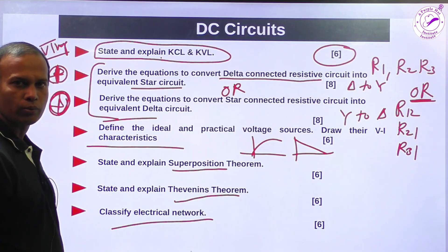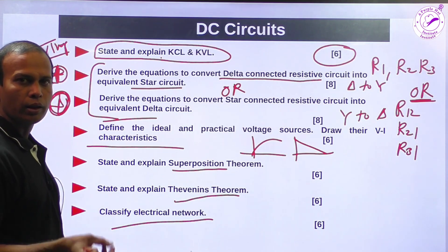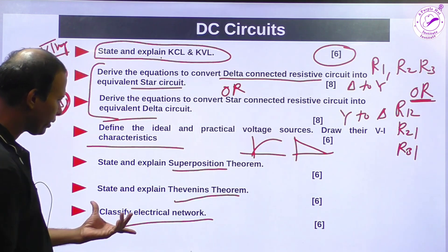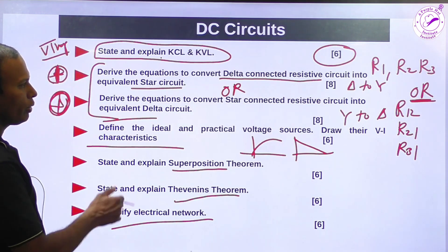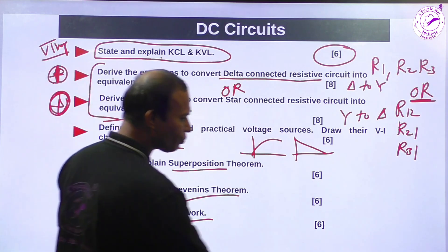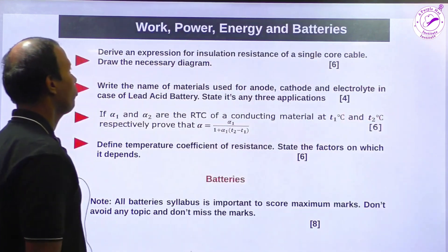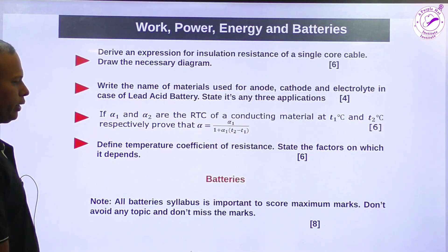Classify electrical networks - active network, passive network, linear network, nonlinear network, lumped network, distributed network. There are so many classifications present in this case, so this is again giving you multiple marks. And finally, work, power, energy, and batteries.